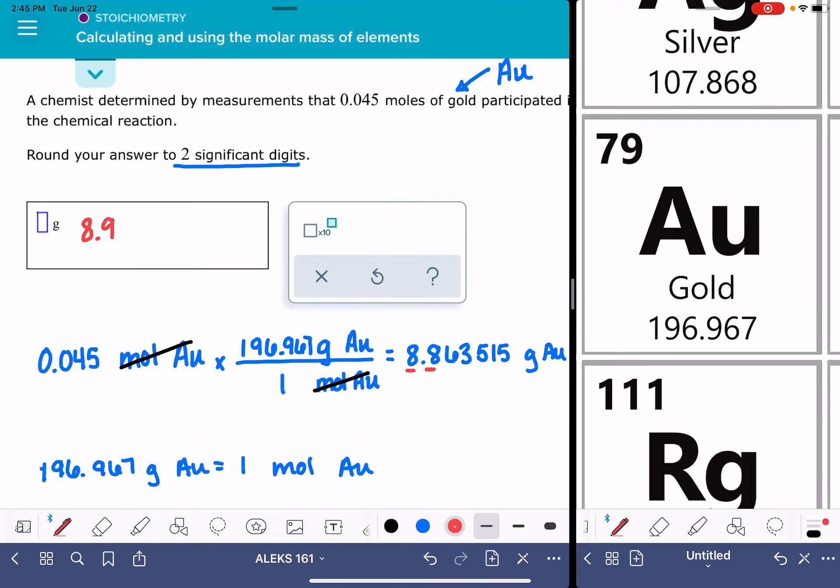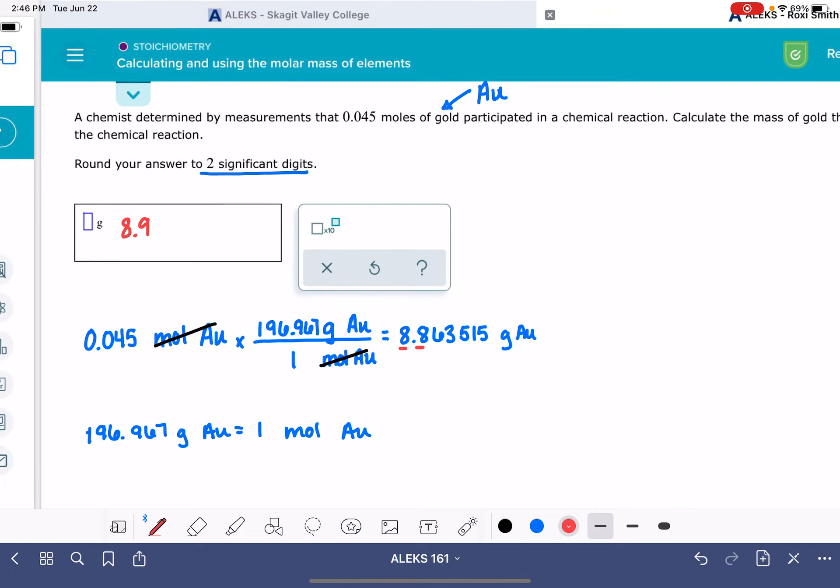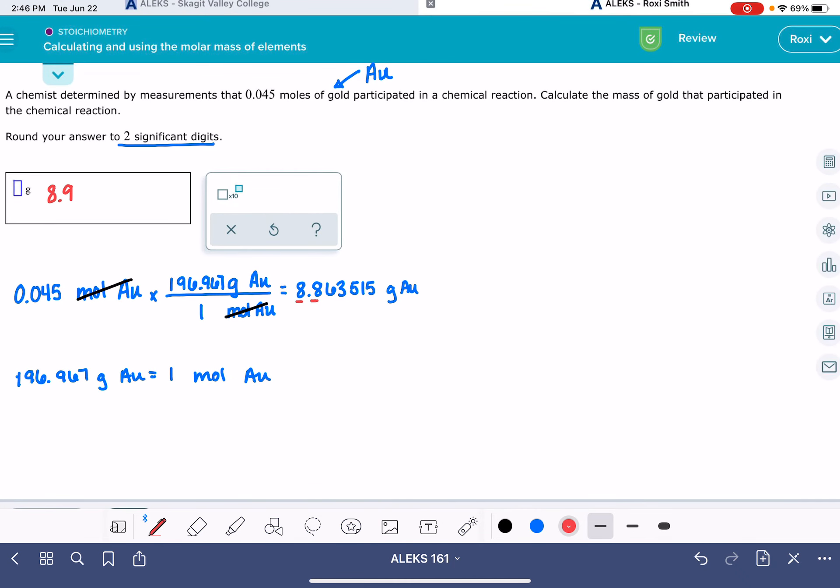Now one last word of warning that I want to give you when you're working on this problem: you definitely should solve this problem using ALEKS's periodic table, which you can locate with this little box or this little button over here. Don't use your own periodic table because sometimes the masses, this number that you get right here, sometimes they're a little bit different than what ALEKS has, and that could cause your answer to be wrong. So make sure you click on this little periodic table and use the mass from ALEKS's periodic table to make sure that you're going to get your answer correct.